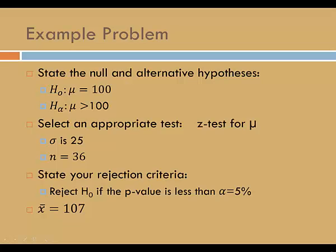Let's look at a simple one-tailed hypothesis test. In this case we're testing whether the mean is greater than 100. We'll assume that we know the population standard deviation, and that's 25, and that our sample size is 36.